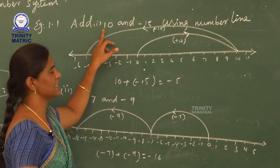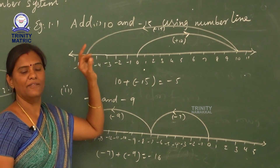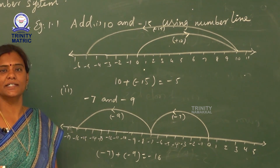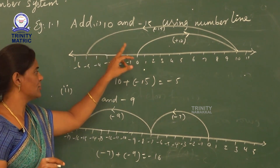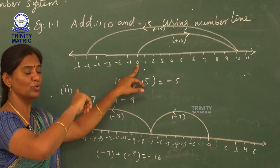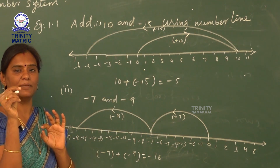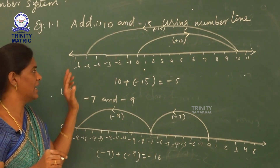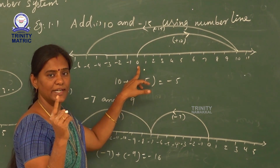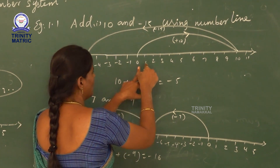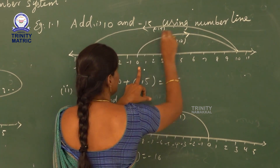The first integer is plus 10. Whenever we add integers, first we start at 0. From 0, we move to the right side because a positive number indicates the right side and the minus sign indicates the left side. From 0, we count 10 units to the right side: 1, 2, 3, 4, 5, 6, 7, 8, 9, 10. So plus 10 is here.